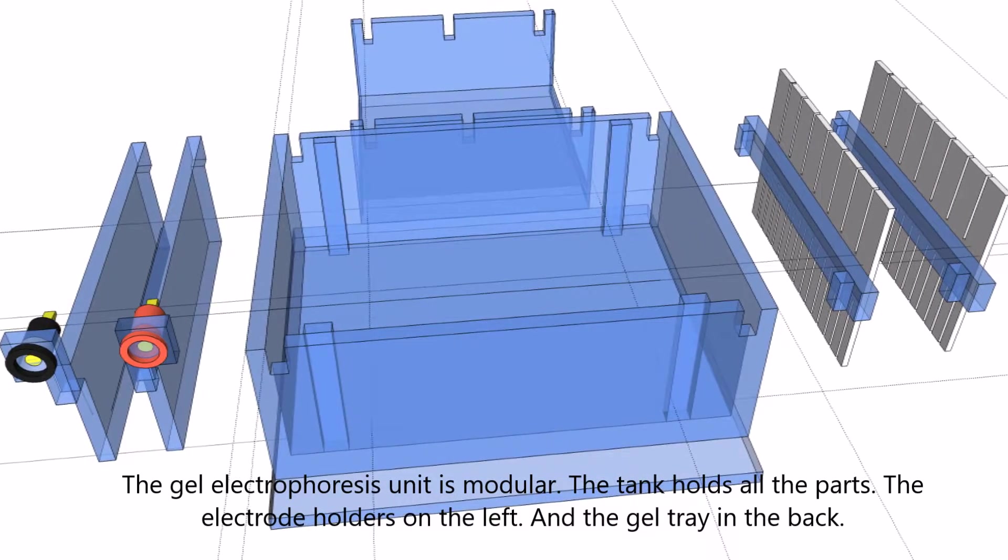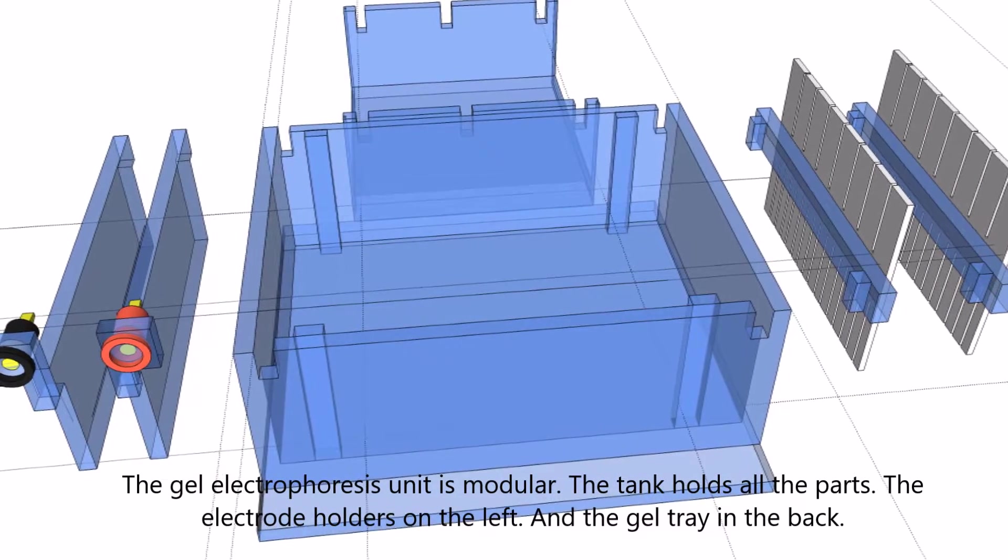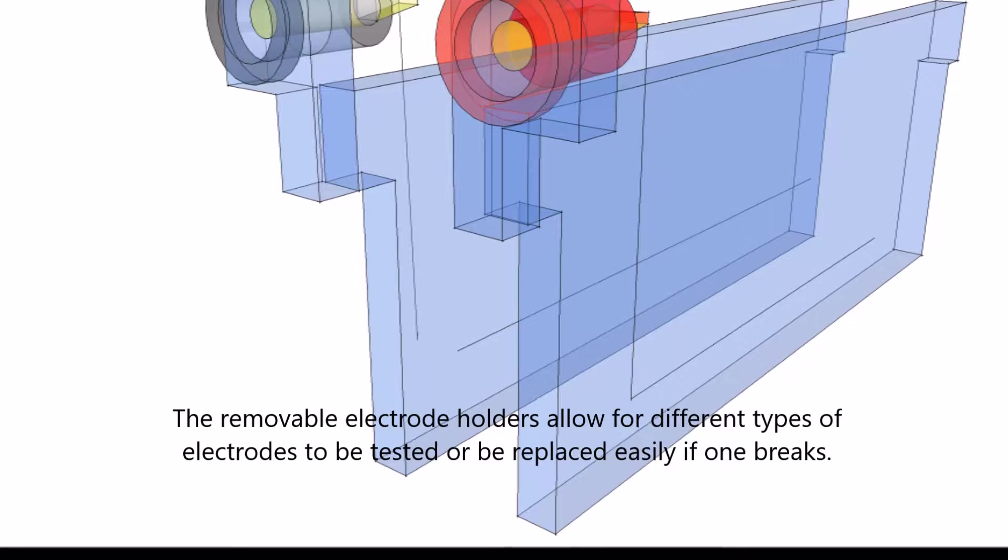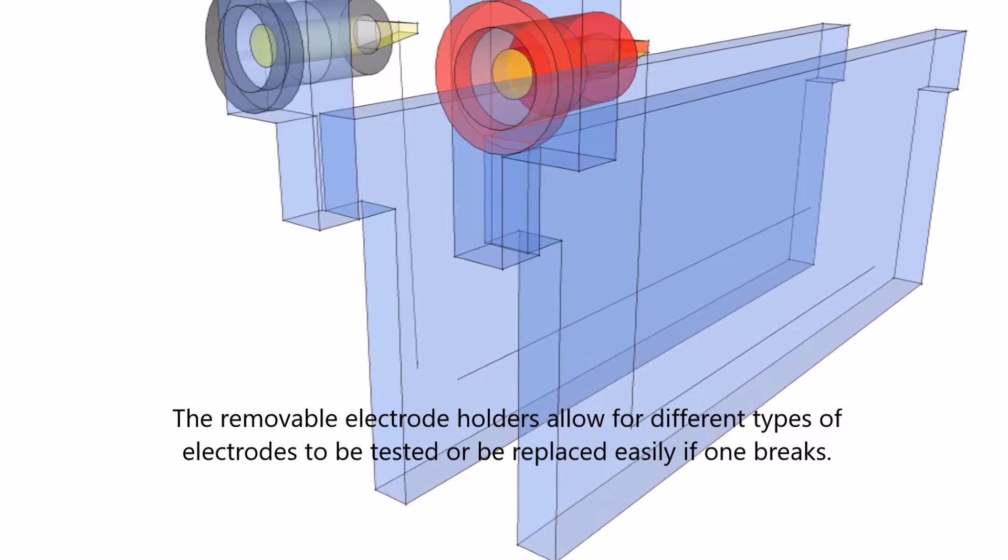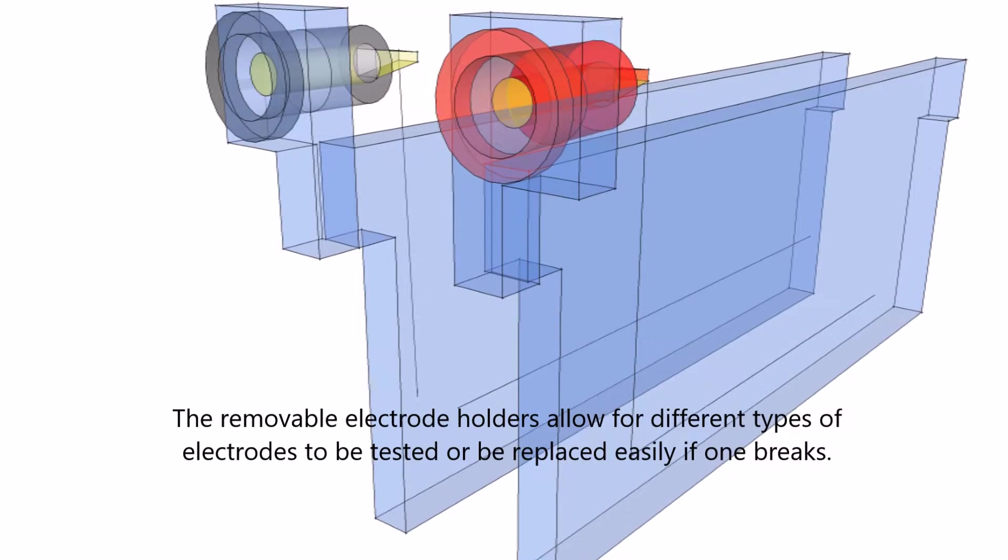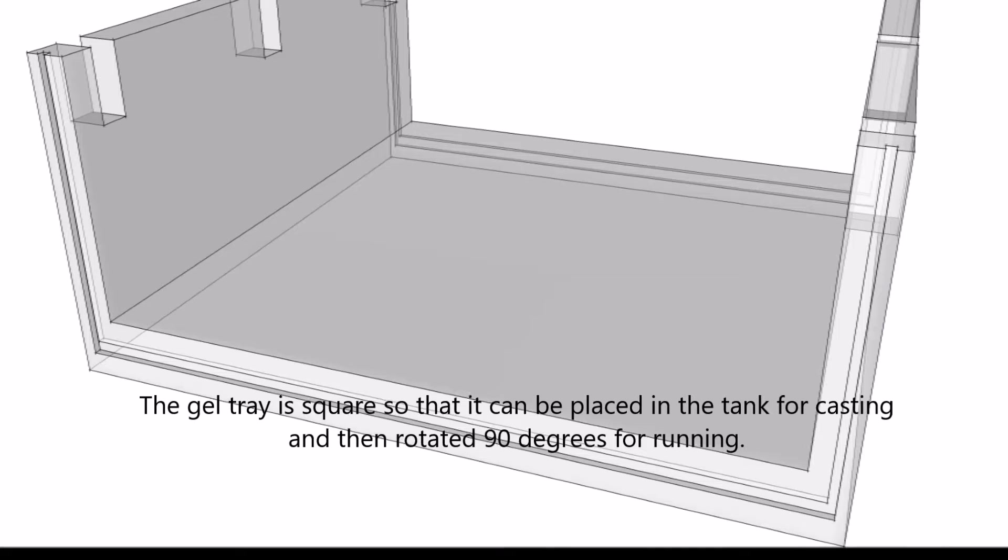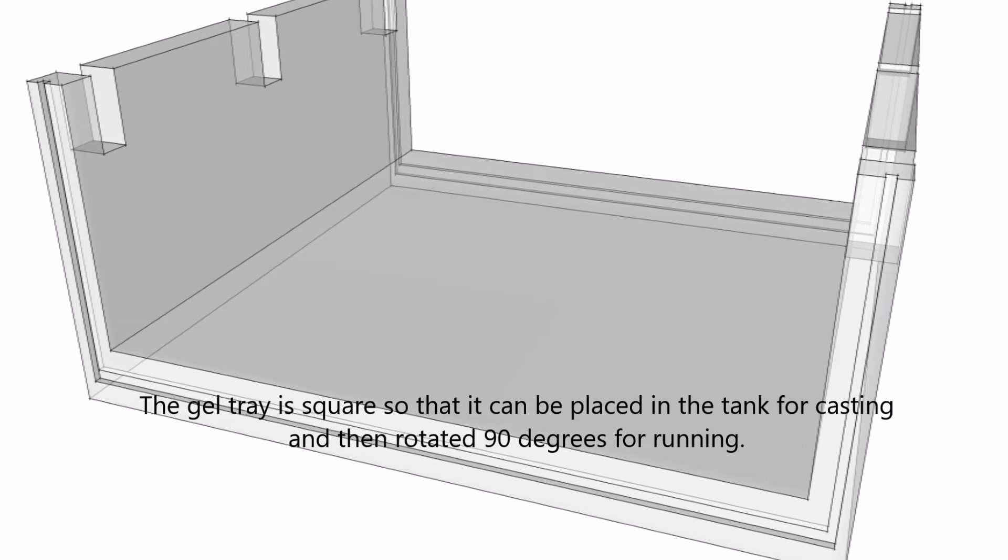In SketchUp, I drew the parts starting from the right - gel combs, then in the middle is the tank, left is the electrode holders. The electrode holders are like plastic plates, removable ones, so you can change the electrodes if you have shortage of some materials.